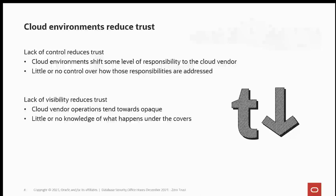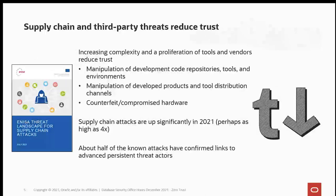Another thing that can cause us to reduce our trust is concerns about the security of our supply chain. There have been lots of stories in the news over the past couple of years about supply chain vendors — people who produce hardware routers that come with compromises built in, motherboards with spyware built in. Some of our most trusted software vendors have been hacked and source code accessed, and we've lost a little bit of trust in the security of our supply chain.